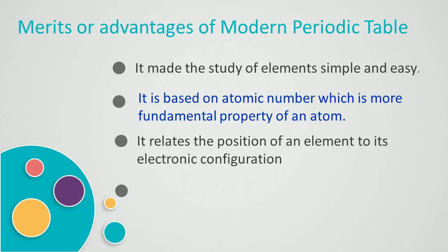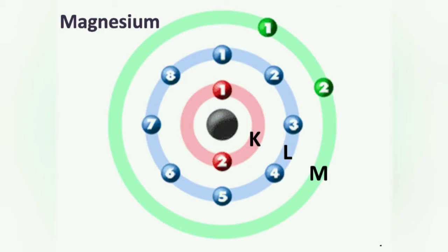We can write the electronic configuration of an element from its atomic number, which can help us find its position in the periodic table. For example, the electronic configuration of magnesium is 2, 8, 2 because its atomic number is 12. From its electronic configuration, it is clear that electrons are present in three shells, and the number of shells occupied by electrons equals the period number. So magnesium belongs to period number 3. Also, there are two electrons in the valence shell, which means magnesium belongs to group 2 of the periodic table.